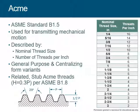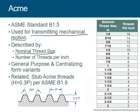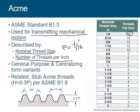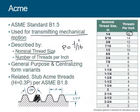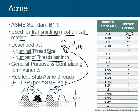The ACME thread is used for transmitting mechanical motion. It has a nominal thread size and the number of threads per inch — for example, 16 means the pitch is 1/16th of an inch. The major difference between ACME and unified is the angle: here it's 30 degrees versus 60. That change in angle allows more material — more meat — in the thread, so it can handle more mechanical load than a regular thread.